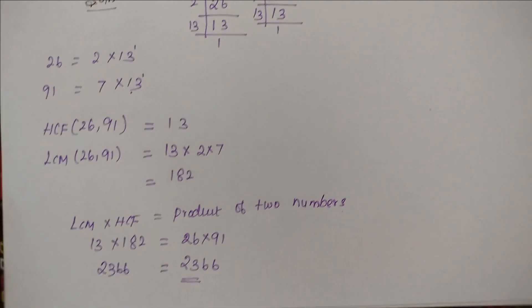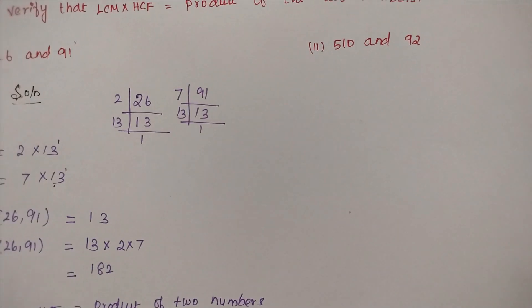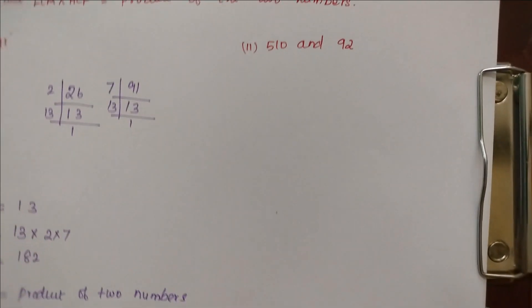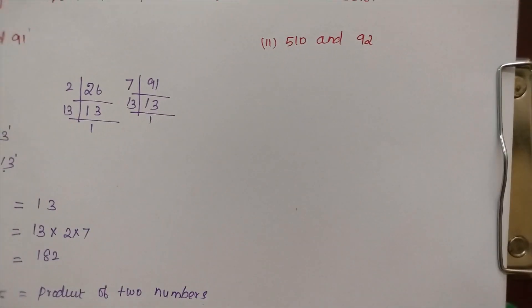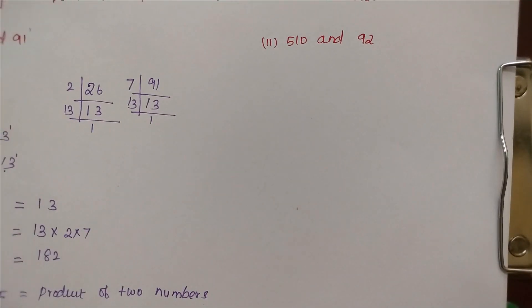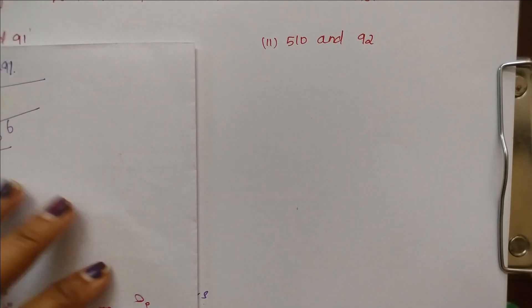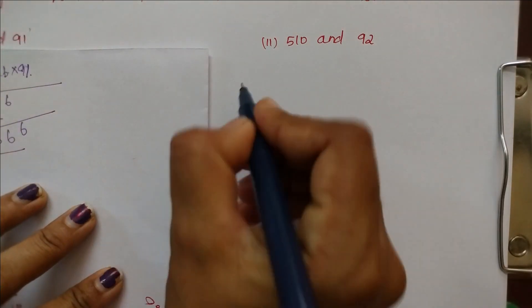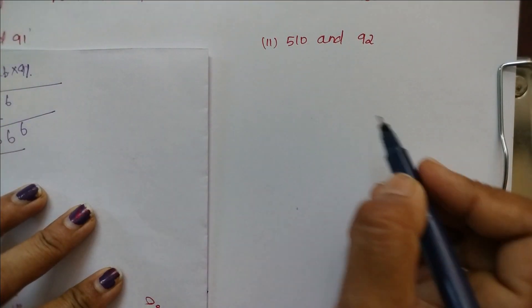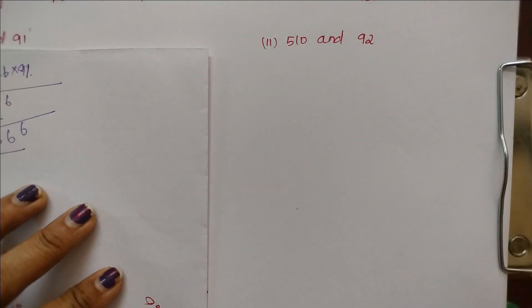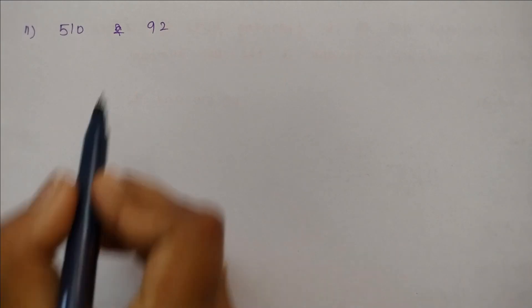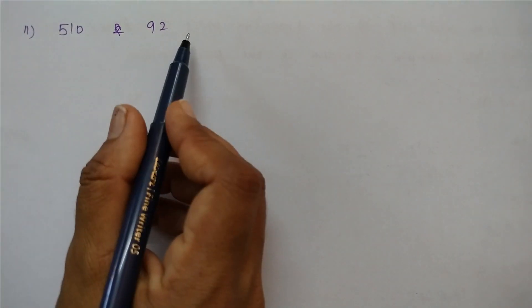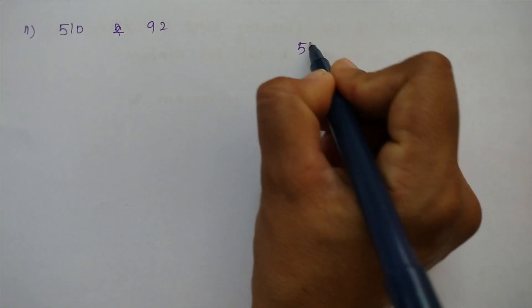This is the answer for the first pair. Second question: the numbers are 510 and 92. We will find the prime factors of 510.